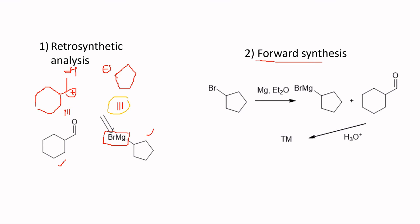This completes the retrosynthetic analysis. For the forward synthesis, you start with an alkyl halide and react it with magnesium in ether solvent to produce the Grignard reagent. You then react the Grignard reagent with the aldehyde to give the target molecule. That is the end of this video.